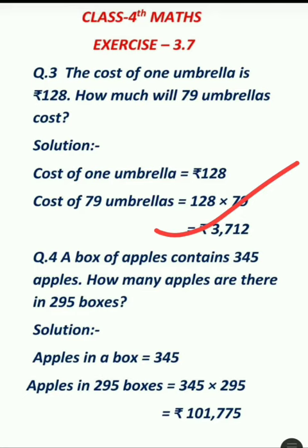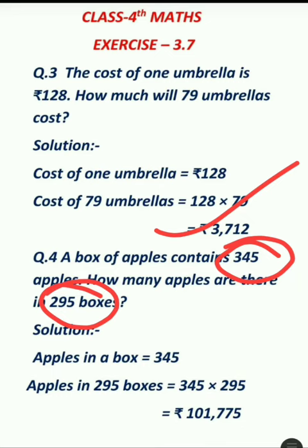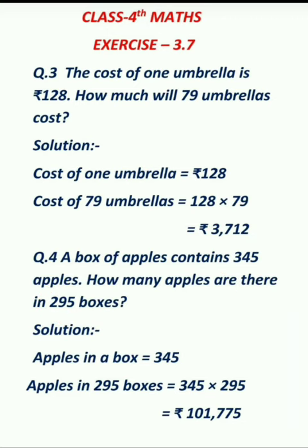Next is the same — here we multiply. Here 345 apples contain a certain amount, and you will have to tell how many apples will be in 295. Same as before, here we use multiplication, which I have written. You will write the same in your copy. Have a nice day, all.